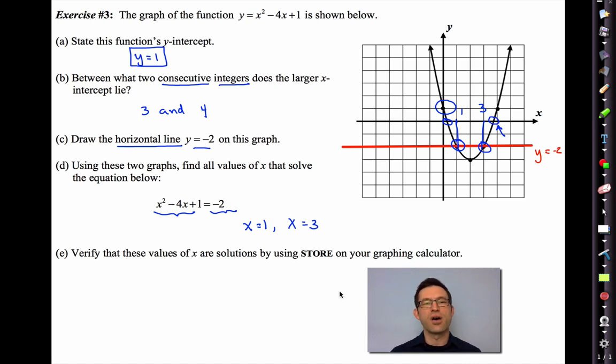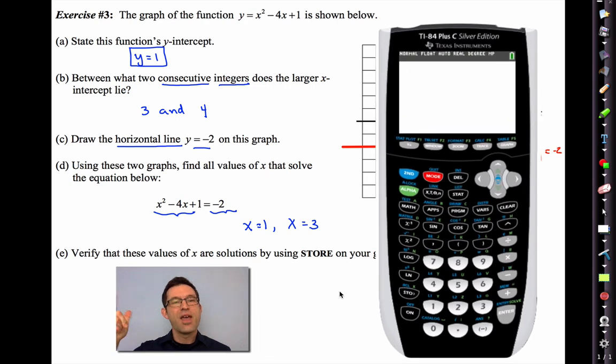Letter E says, verify that these values of x are solutions by using the store on your graphing calculator. Well, we could use store, we could use a table, we could use a variety of things, but let me use store since that's what the direction said. Let me open up the TI-84 plus again. Now, how am I going to do this? Well, what I'm going to do is I'm going to store 1 into x. So let's do that. 1, store, x. And then what I'm going to do is I'm going to type out the left-hand side of that expression. So watch. x squared minus 4x plus 1. Now I'm going to hit enter. And it tells me negative 2, which tells me it's a solution. I could do the same thing for x equals 3, but I don't think I'm going to. I just wanted to show you how easy it is to use store to check to see if something's the solution to an equation.